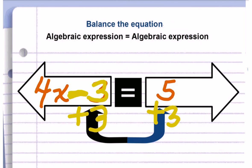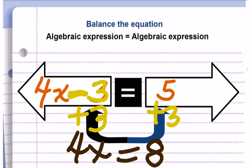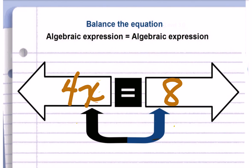We end up with a new equivalent version of our equation. 4X equals 8. Now we do the next thing. We'll find the inverse operation for the next item, working towards getting X by itself.